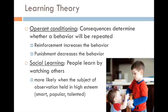There's also social learning theory, where people learn by watching others. It doesn't have to be that you actually receive a reward or punishment to change a behavior — you can learn just by watching your siblings, learning what to do or what not to do. Social learning is more likely when you're observing someone you hold in high esteem — someone smart, popular, or talented. My daughter looks up to her brother and often tries to mimic many of the things he does.